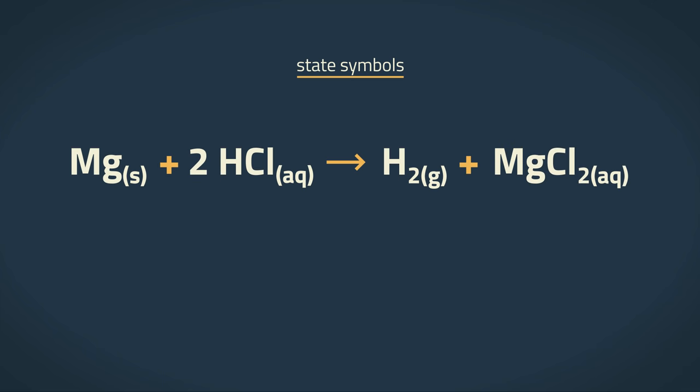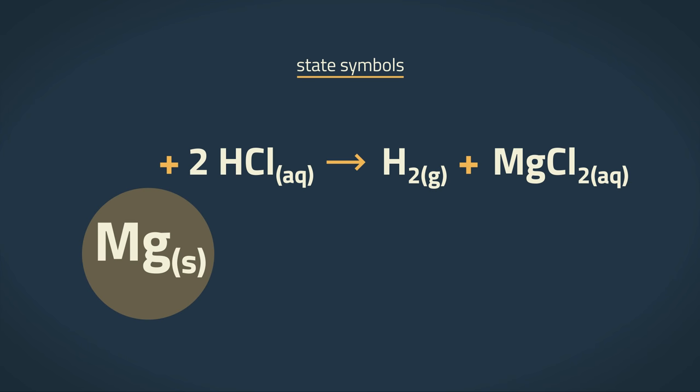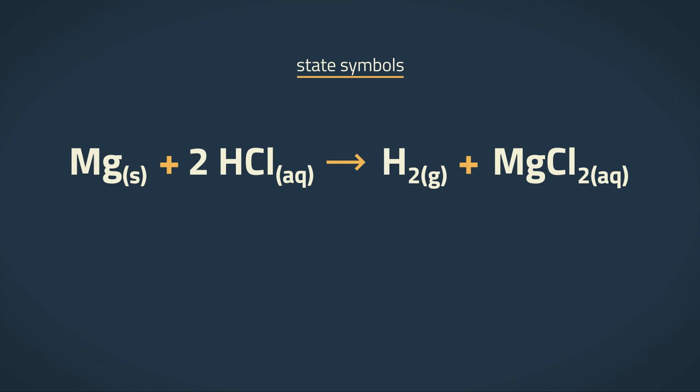This is written after each reactant or product in brackets and in subscript, meaning a bit lower than the actual text. As magnesium metal is solid, we represent this state with lowercase s in brackets, in subscript right after the symbol.